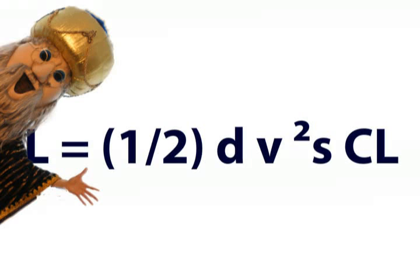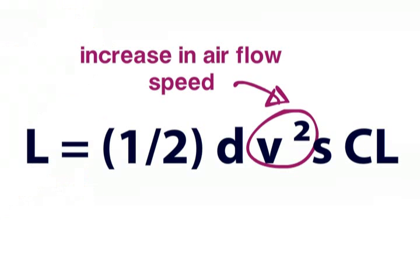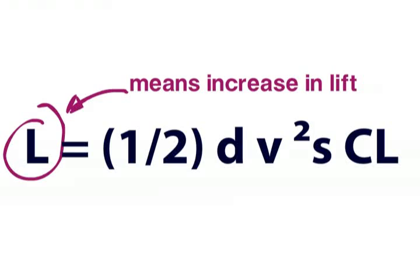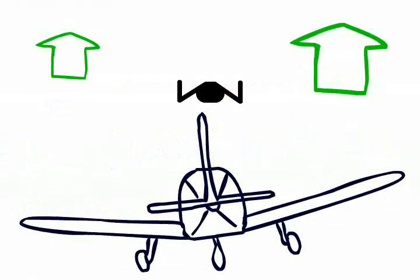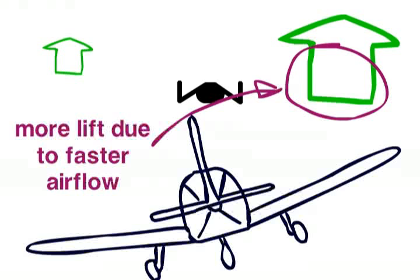From the lift formula of episode 3, you will remember that faster air results in more lift. More lift on the right wing compared to the left will then result in a roll.